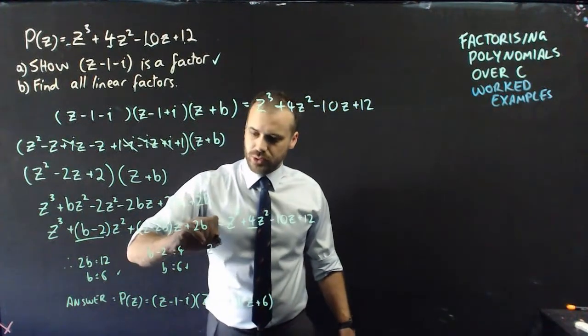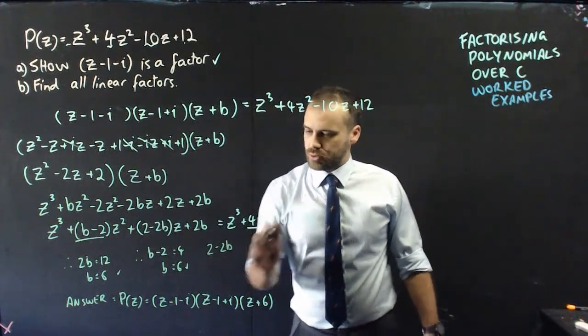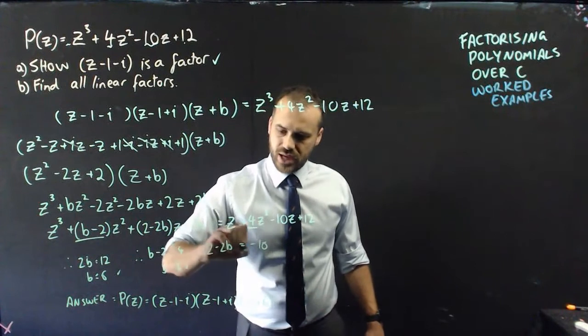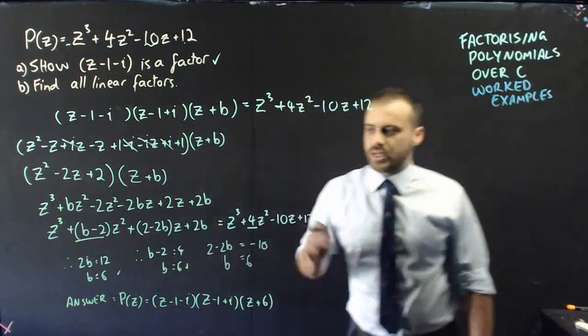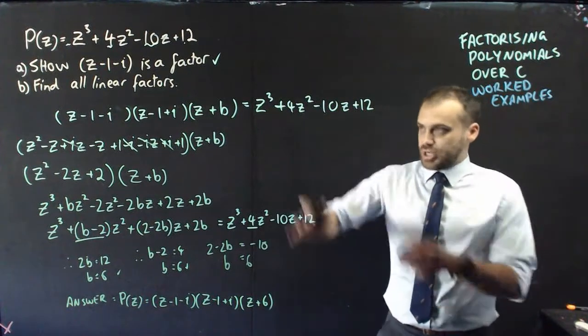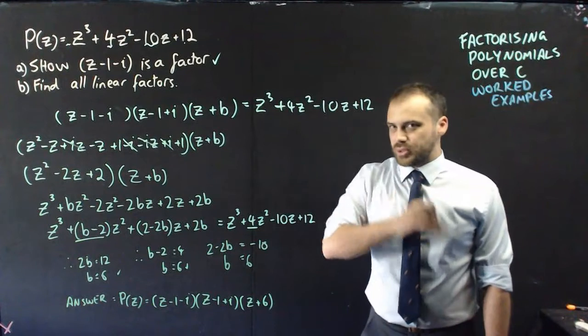So, which means that I can do this one more time, because I can say, 2 minus 2b is equal to negative 10. And if you work through that, you're going to find that b equals 6. So, my math checks out, I have fully factorized this thing. Let's do another one.